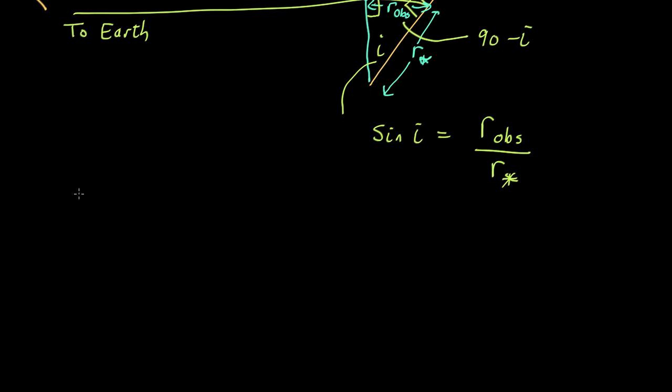If you remember, our equation to work out the mass of the planet was M star over M planet equals R planet over R star. But we don't know R star. What we know is R obs.